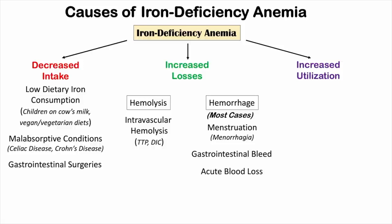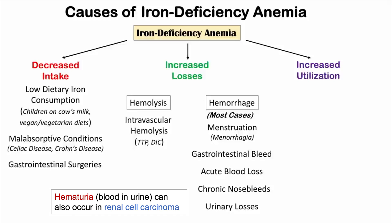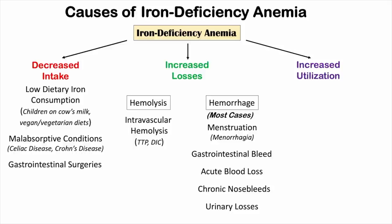Acute blood loss — such as from a large cut — is another cause of iron deficiency anemia. Chronic nosebleeds can also lead to enough blood loss that a patient loses iron without getting enough back to compensate. Additionally, urinary losses such as hematuria (blood in the urine), which can occur with urinary tract or bladder issues, can also cause iron deficiency anemia.